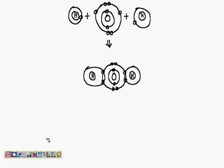Just look at this part — this is the second orbit, which is having six electrons. I'm showing it with the red line: this electron is of hydrogen and this electron is of oxygen. The same thing is happening on the other side — this electron is here and this electron is here.